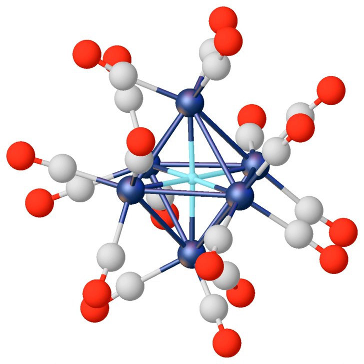Water and other protic solvents cannot serve as a medium for ionic hydrides because the hydride ion is a stronger base than hydroxide and most hydroxyl anions. Hydrogen gas is liberated in a typical acid-base reaction. Na plus H₂O gives H₂ plus NaOH, delta H = −83.6 kJ per mole. Certain alkali metal hydrides react with metal halides; lithium aluminium hydride arises from reactions of lithium hydride with aluminium chloride: 4 LiH + AlCl₃ → LiAlH₄ + 3 LiCl.